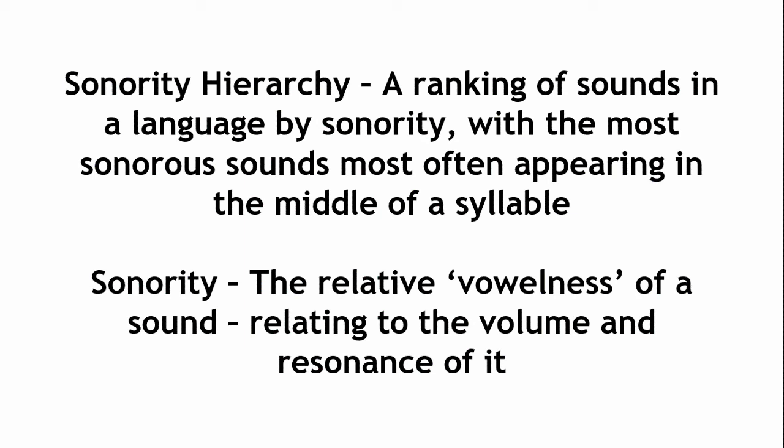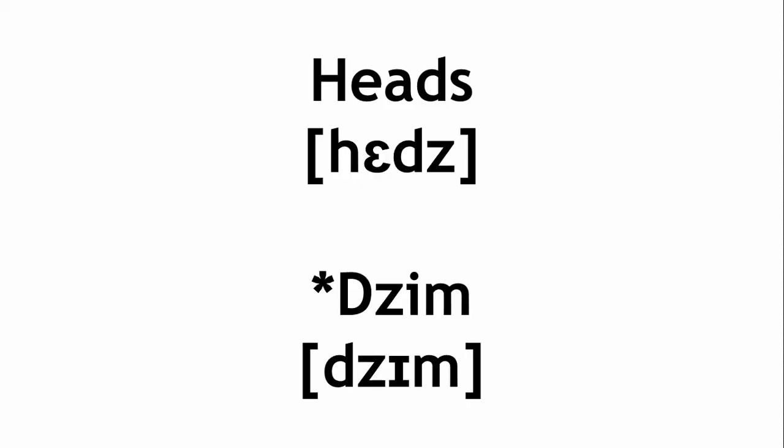Other structures are often just not allowed, or not allowed in certain positions. For example, a DZ cluster is allowed in the coda but not in the onset — that is, it appears in words like 'heads', but can't occur in something like 'dzim'.